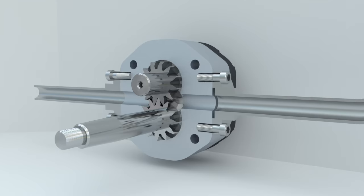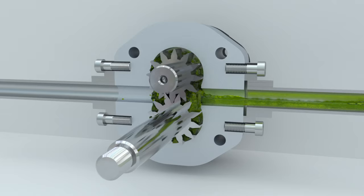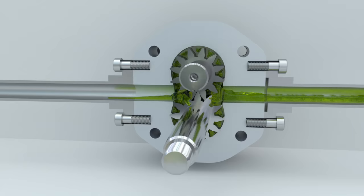When the gear teeth come out of the mesh, the volume of the chamber increases and the pressure inside becomes lower than atmospheric pressure. Fluid from the tank enters the pump and fills the space between the gear teeth and the housing.